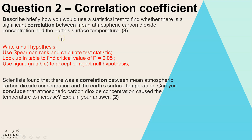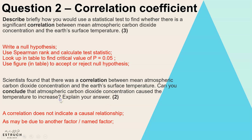Some statistics questions don't actually involve calculations — it's just talking through the process of how you would calculate your statistic and analyze what the result tells you. The second part of this question: scientists found a correlation between mean atmospheric carbon dioxide concentration and the Earth's surface temperature. Can you conclude that atmospheric carbon dioxide concentration caused the temperature to increase? The answer is no — there are no marks for saying no, both marks are for the explanation.